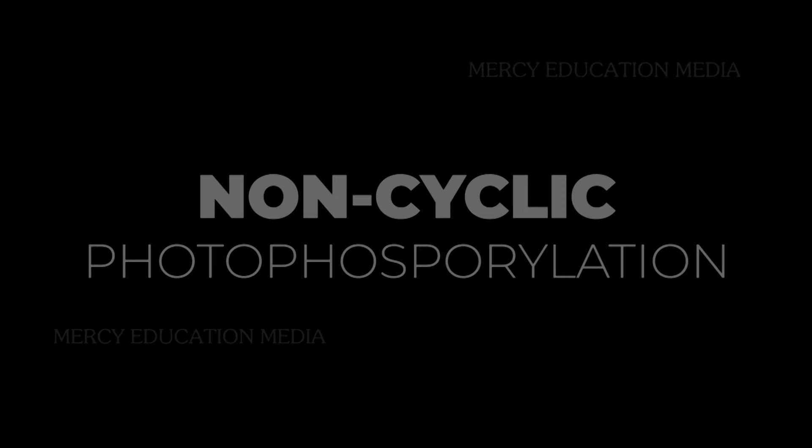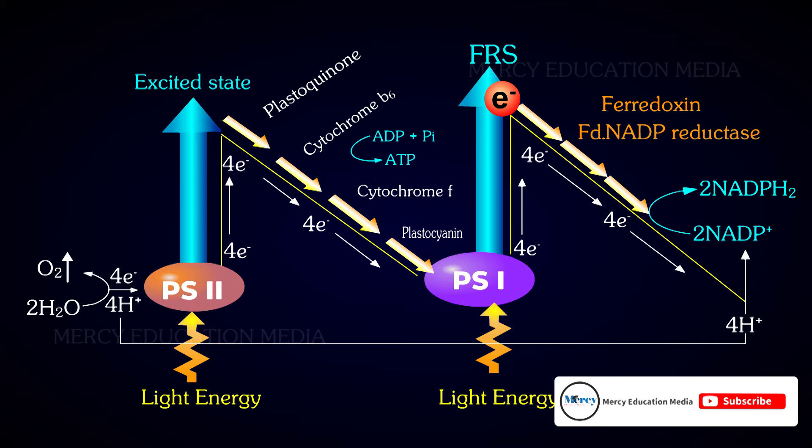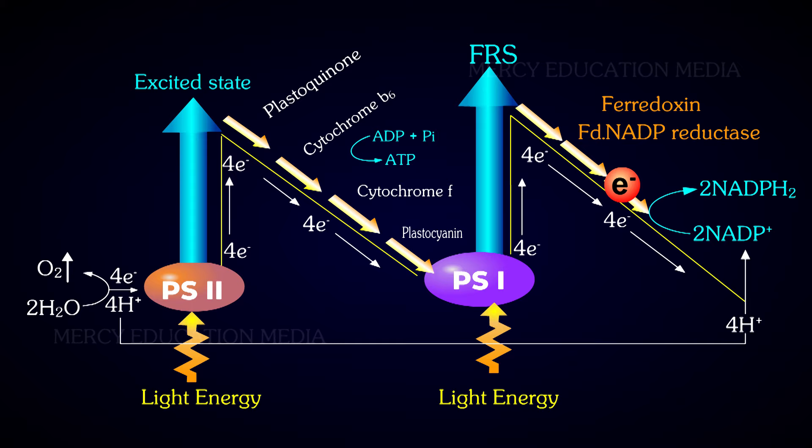When the molecules in PS1 are excited, the electrons are released. An electron deficiency or a hole is made in PS1. This electron is now transferred to ferredoxin to reduce NADP+.